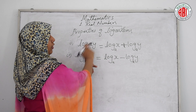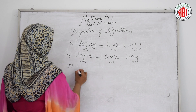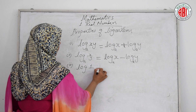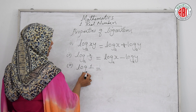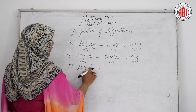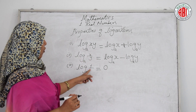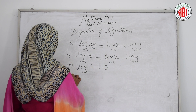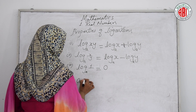The third property: log 1. If the base is any number — 2, 3, 10, anything — the value of log 1 is always 0. No matter what the base is, log 1 always equals 0.